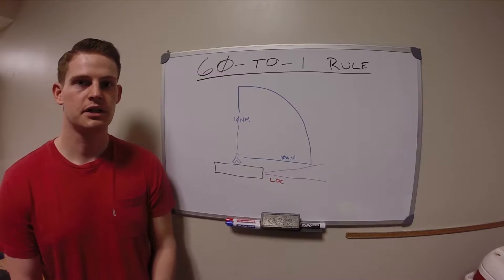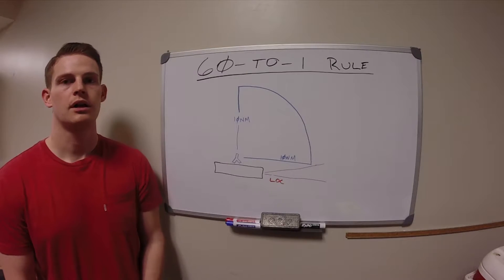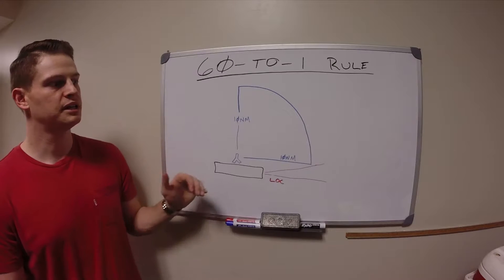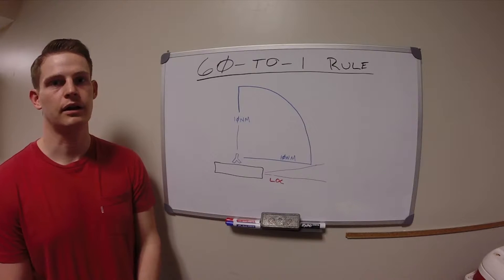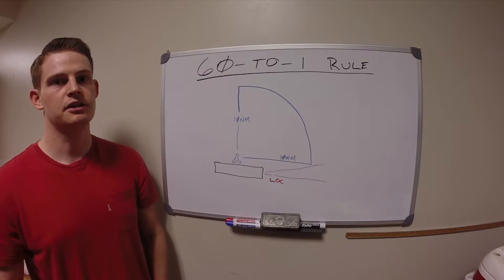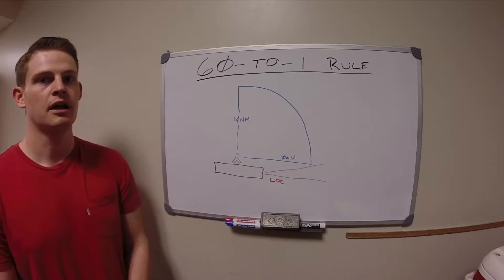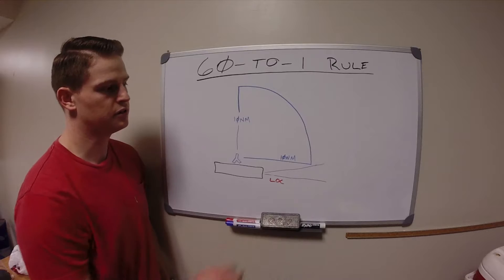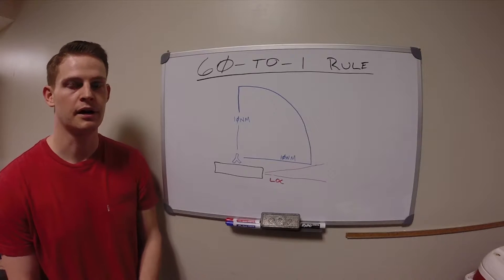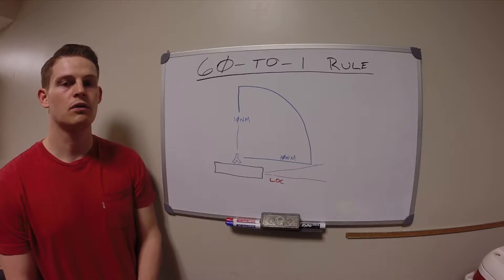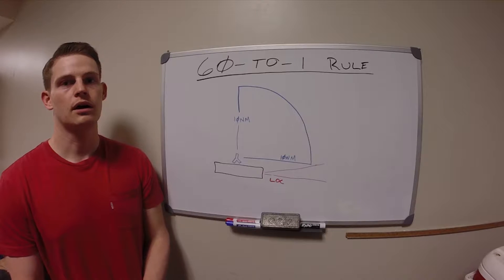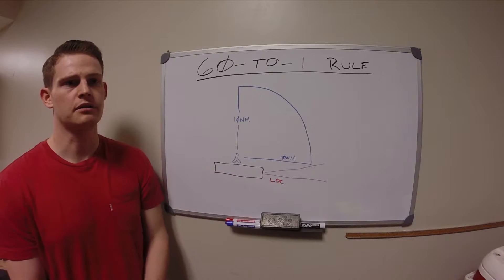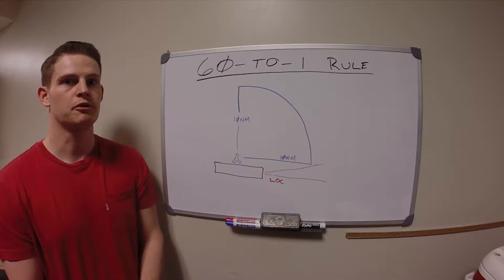One of the main times when you would use the 60-to-1 rule is when you're shooting an instrument approach. This is a very simplistic look at what an instrument approach might look like. Oftentimes you can get vectors onto the final approach segment — in this case a localizer extending off the threshold of the runway. However, in a non-radar environment, or if you want to practice a full procedure, or for any number of other reasons, as a pilot you may have to fly the full procedure.